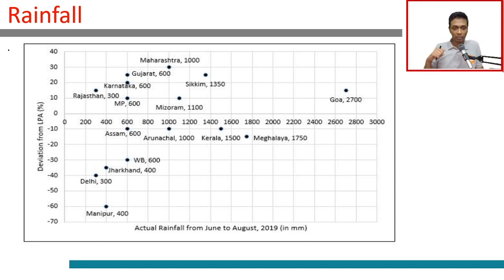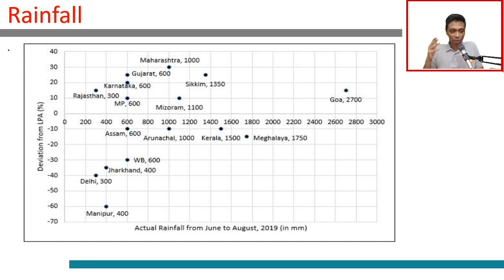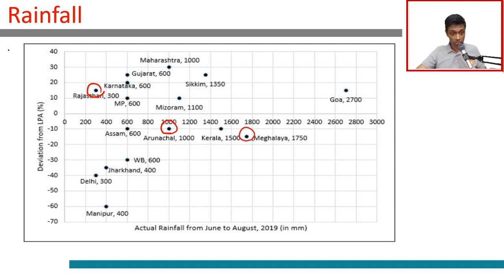States shown include Maharashtra, Gujarat, Karnataka, Rajasthan, Sikkim, Mizoram, and others. The actual rainfall for each state is given in millimeters for the June–July–August period, along with deviation from LPA. For example: Rajasthan had 300mm of rainfall and is 15% more than LPA; Arunachal had 1000mm and is 10% less than LPA; Meghalaya at 1750mm is 15% less than LPA; Maharashtra at 1000mm is 30% more than LPA.